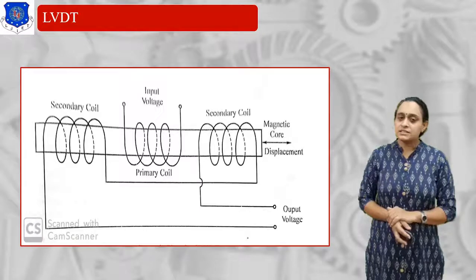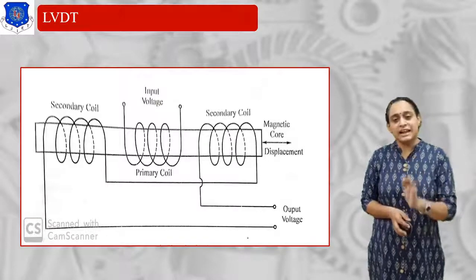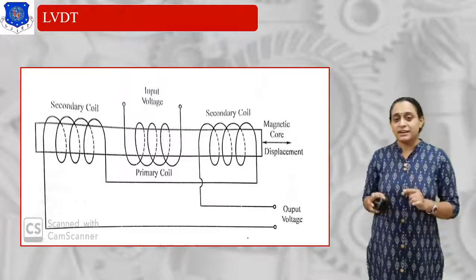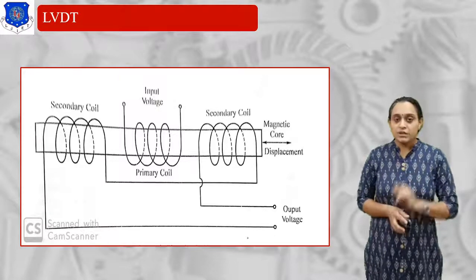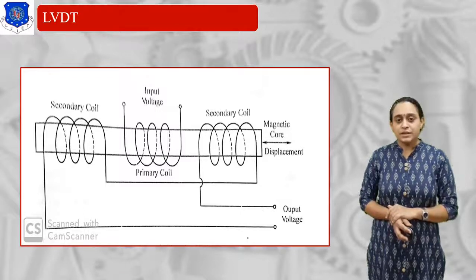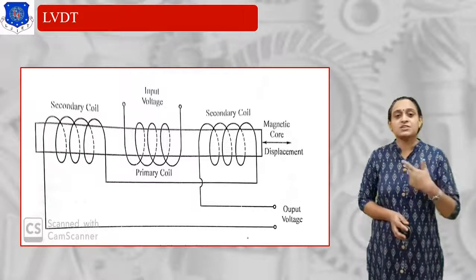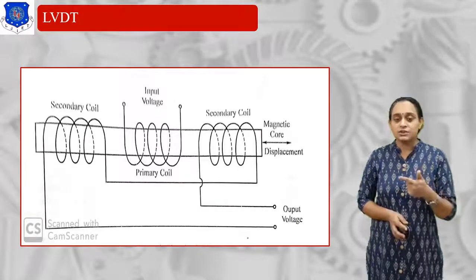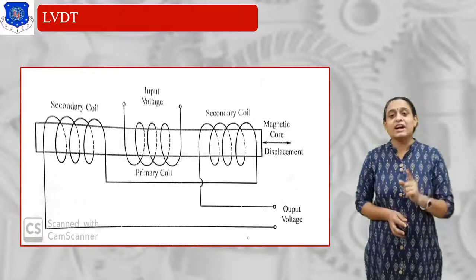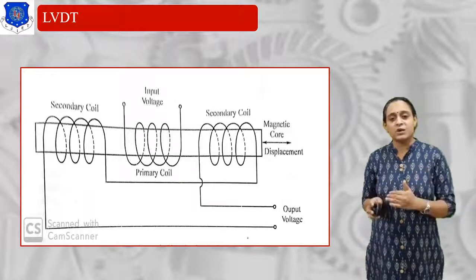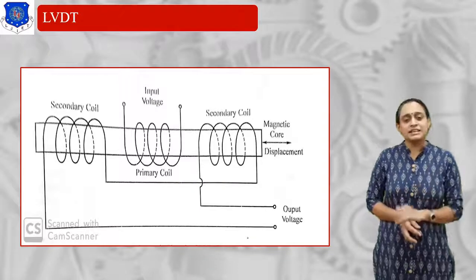Now let us look at the LVDT system. This is also placed on the mechanical vibrating body. As you know, this uses a magnetic system. There is a magnetic core; if the displacement is to and fro, we attach three coils — the first is the input (primary coil), the second is the secondary coil. By the input voltage transmitted through the magnetic core, flux is generated. The flux is cut and in the secondary coil we get the output voltage. By the difference of input and output, we get how much value we are getting from the vibrations — that is what the LVDT system provides.